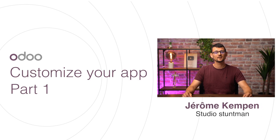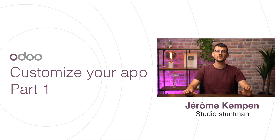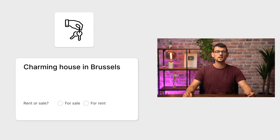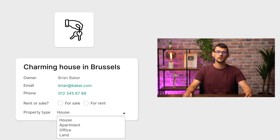Hello, dear Oduers! In the last video, we created our own real estate app from scratch. In this video, we'll continue to build our app by adding fields to our model so that it fully meets our needs. We'll need to know if a property is for sale or for rent, who the owner is and their contact information, as well as what type of property it is. Let's get into it.